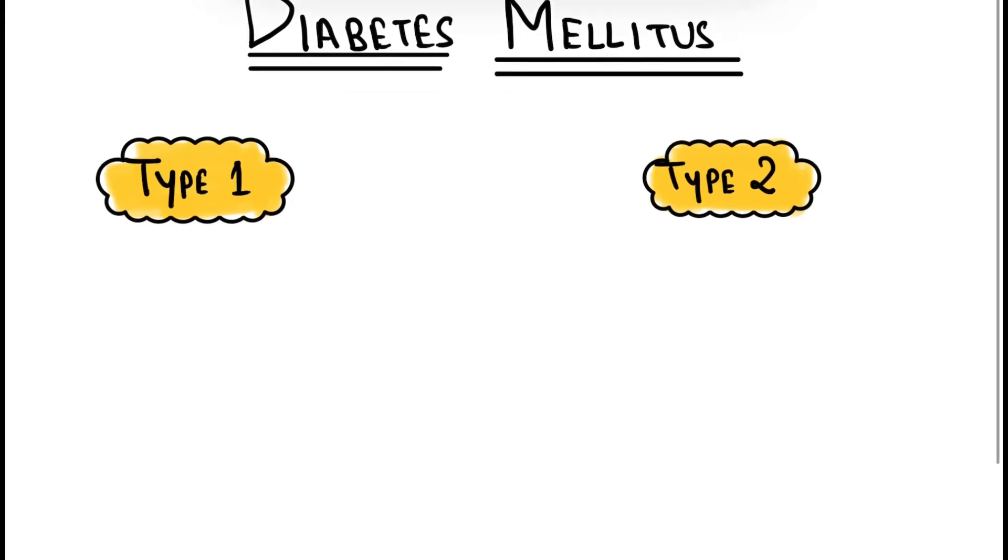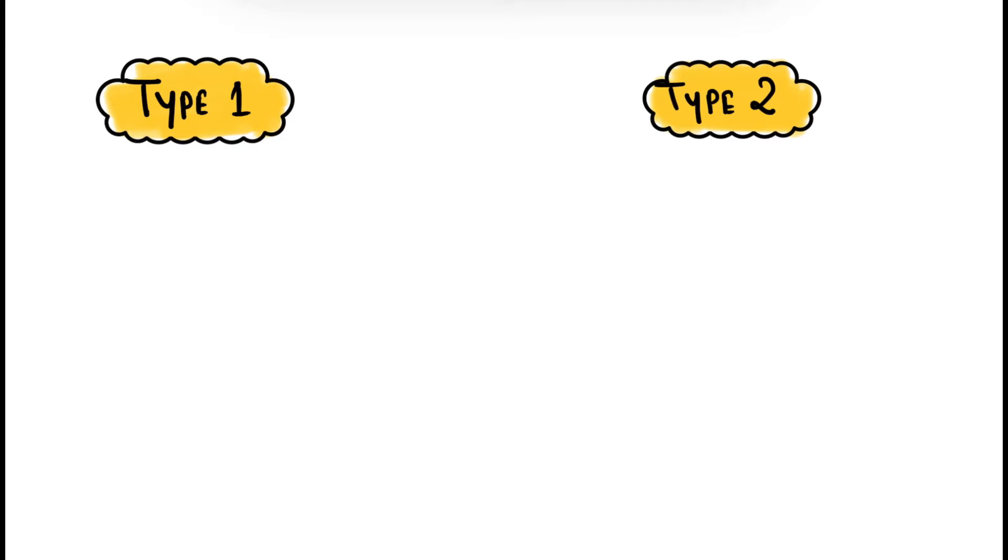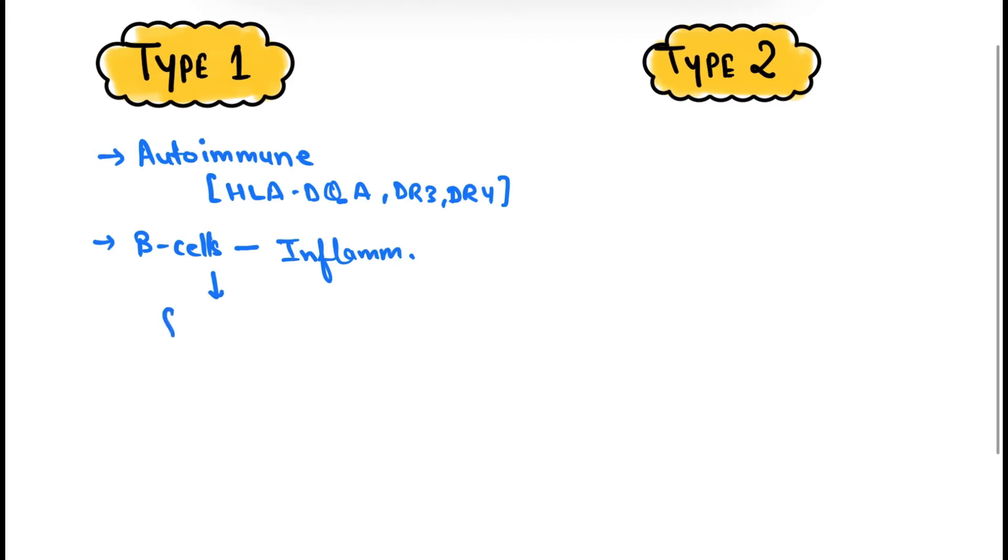Now let's discuss the difference between type 1 and type 2 diabetes mellitus. Type 1 diabetes mellitus is an autoimmune condition that depends on HLA DQA, DR3, and DR4. There are beta cells in the pancreas, and because of this autoimmune reaction, there is inflammation in the beta cells which causes fibrosis and then scarring in the pancreas. Therefore, there is no insulin release from the pancreas.